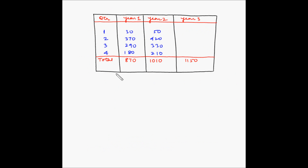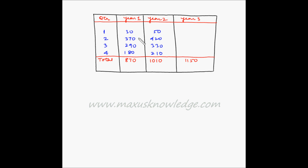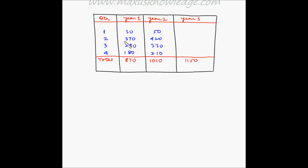This is the information provided. As mentioned, the sales of the fertilizer peak during the spring, summer and fall seasons. As we can see, sales are high for the second, third and fourth quarters compared to the first quarter, since the first quarter is generally winter. Here, each quarter represents one season.